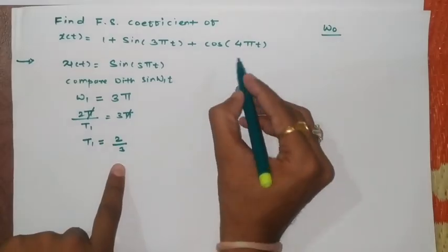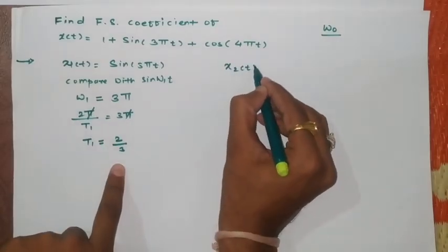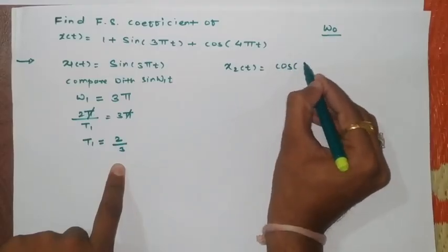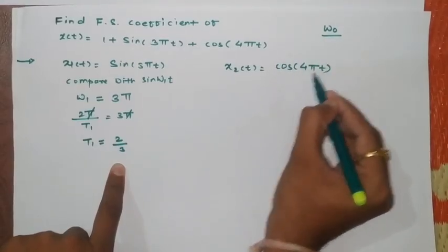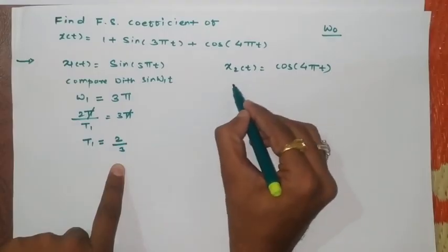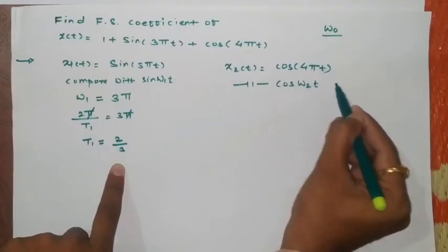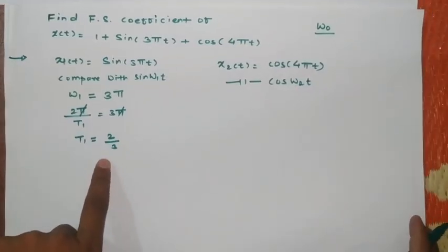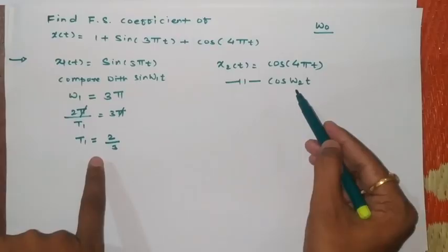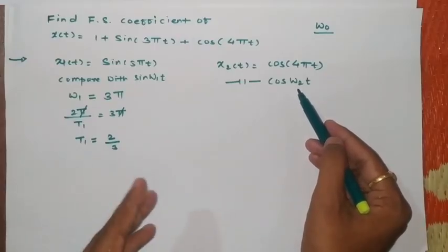Similarly I am considering this as second function which is x2(t) as cos 4π t. We can compare this with standard form as cos ω2 t. Now if you want to know further information about how to find time periods you can refer to my earlier videos.